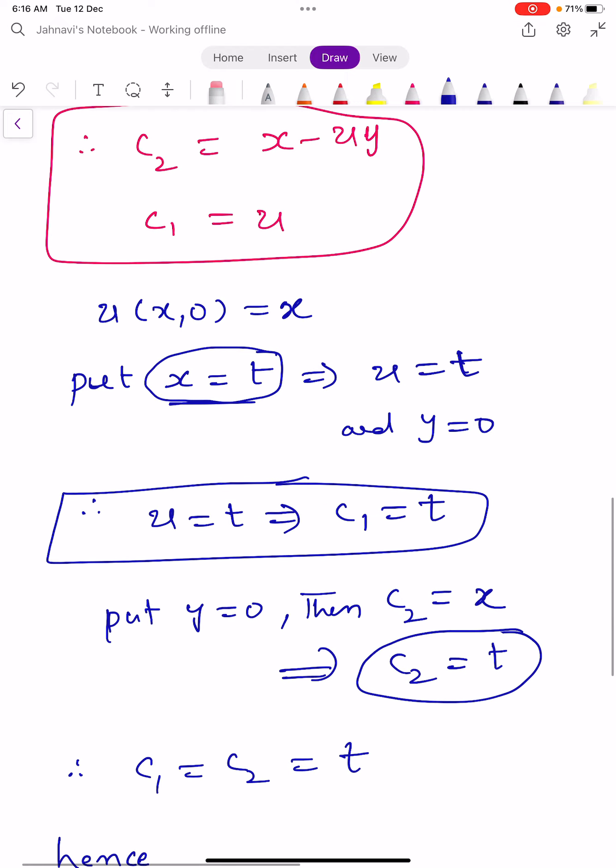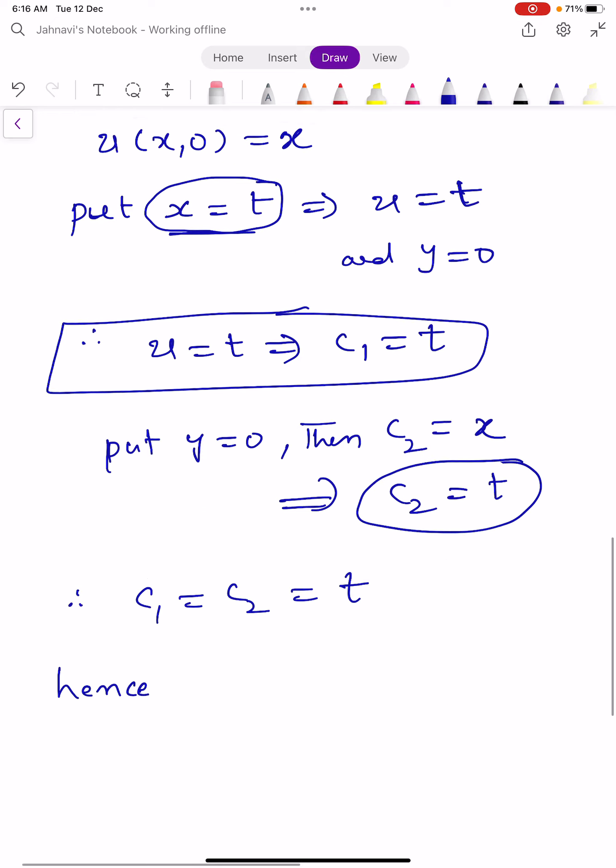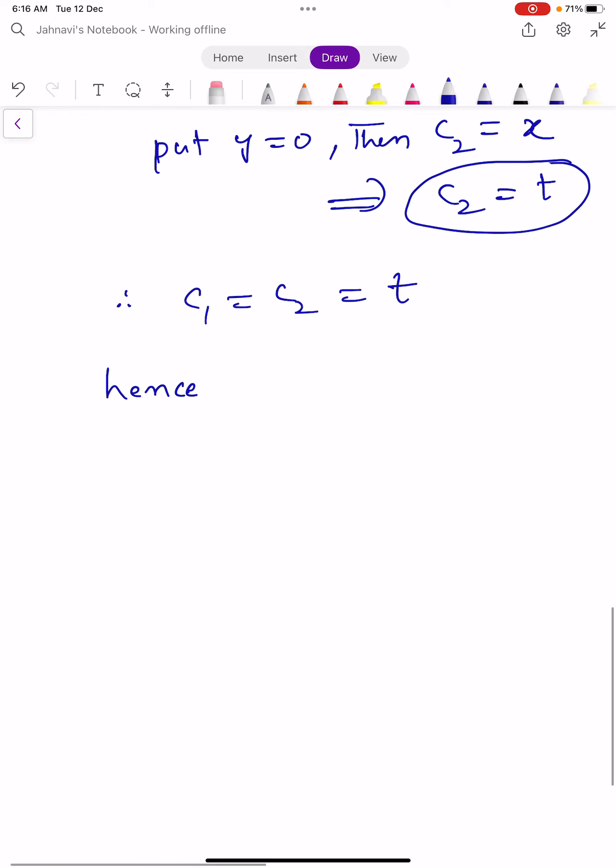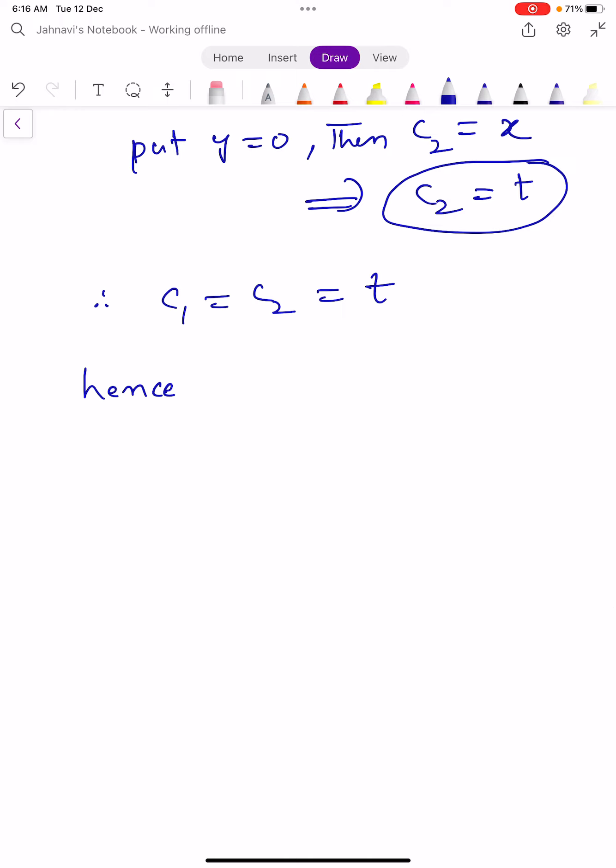Hence, c2 = x - u*y, c1 = u, and we proved that c1 = c2. So we conclude that u = x - u*y. This implies u + u*y = x. By making u common, u(1+y) = x, so u = x/(1+y).